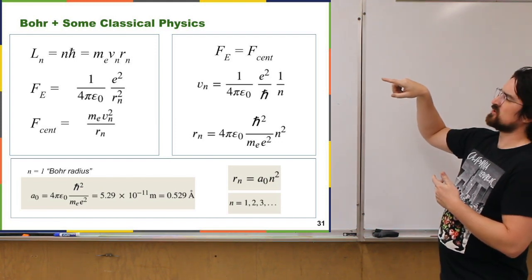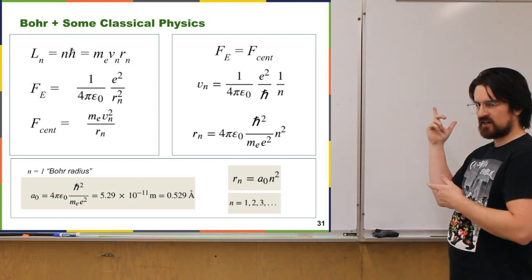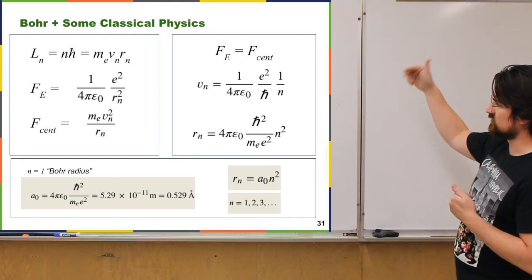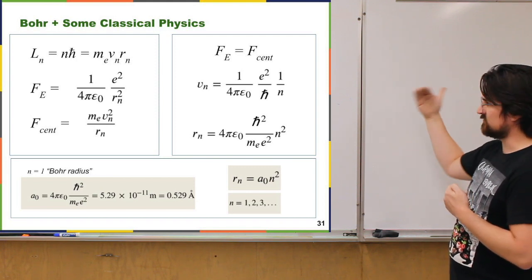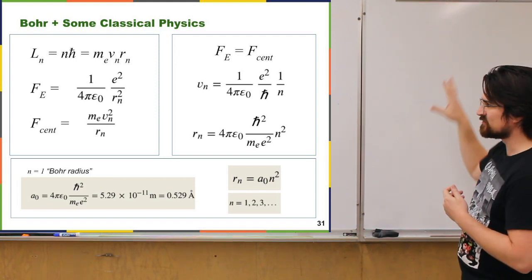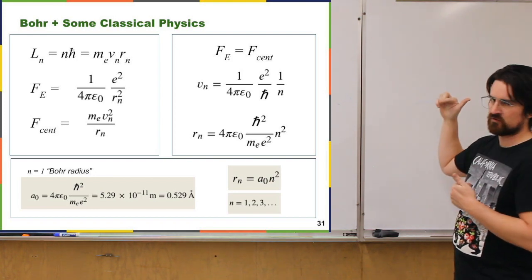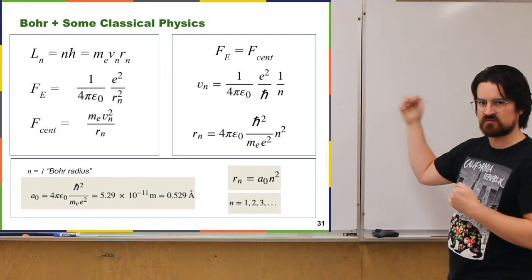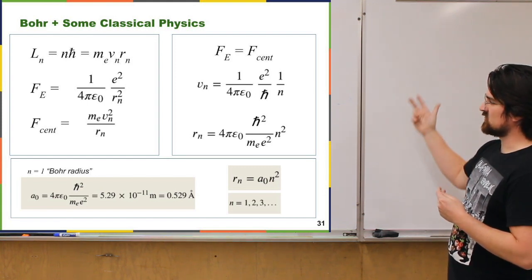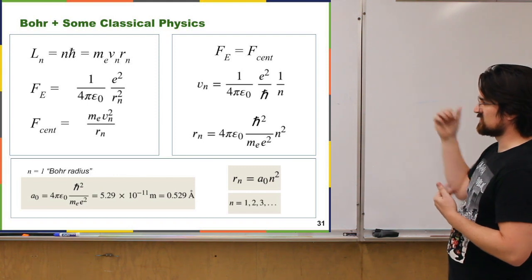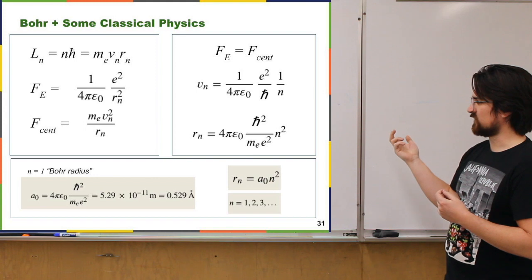Using the angular momentum quantization condition to substitute out velocity or radius, the quantized velocity turns out to be a collection of constants multiplied by 1/n — the quantum number of that orbit. The quantized radius has all those constant values multiplied by n squared, the square of the quantum number.